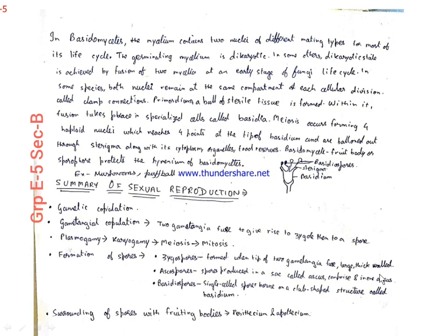In Basidiomycetes, the mycelium contains two nuclei of different mating types in most of its life cycle. The germinating mycelium is dikaryotic, and in some others the dikaryotic state is achieved by fusion of two mycelia at an early stage of the fungi life cycle. In some species, both nuclei remain in the same compartment at each cellular division, which is also known as clamp connection. Within the clamp connection, fusion takes place in specialized cells called basidia. Meiosis occurs there forming four haploid nuclei, which are ballooned out as basidiospores through sterigmata along with its cytoplasm, organelles and food reserves.